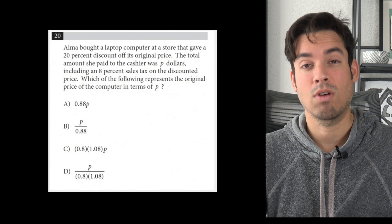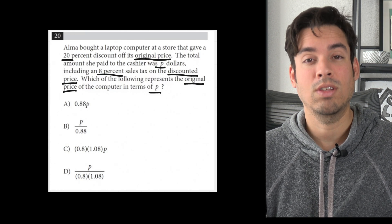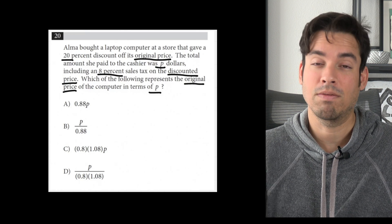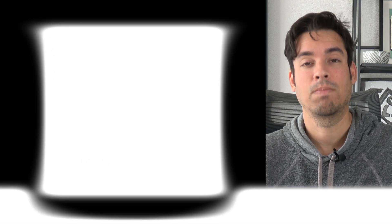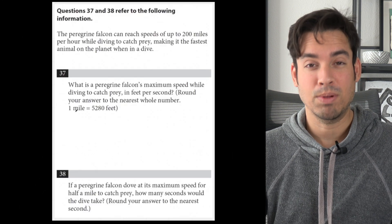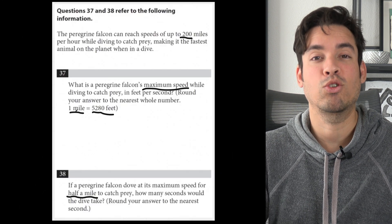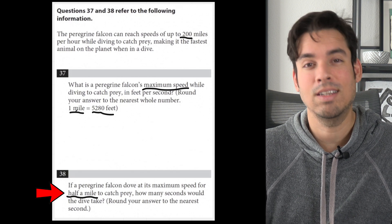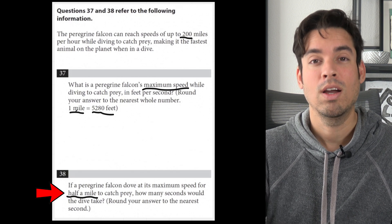Here are some examples of problems where I've gone through and underlined those key pieces of information — the variables and the numbers. In this example in particular, they have numbers written in text, so those are the sneaky numbers that you definitely want to make sure to highlight.